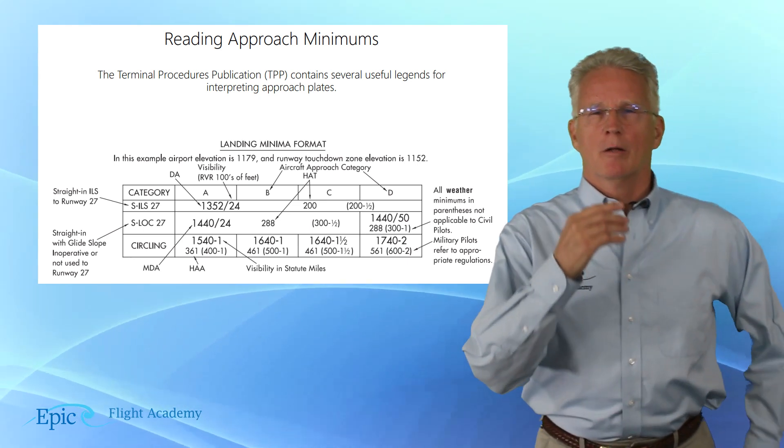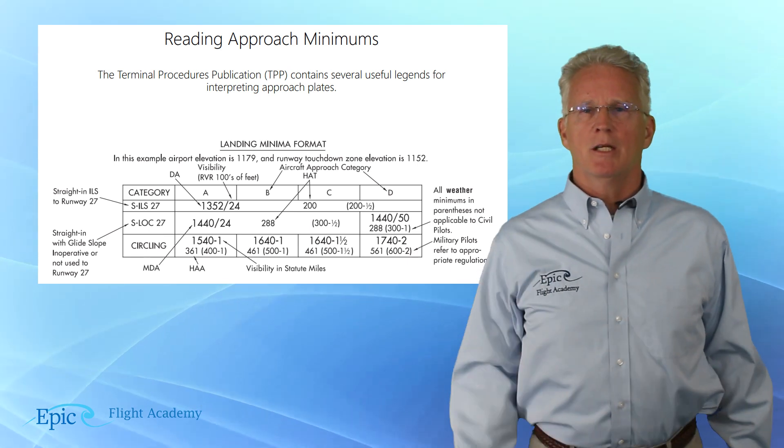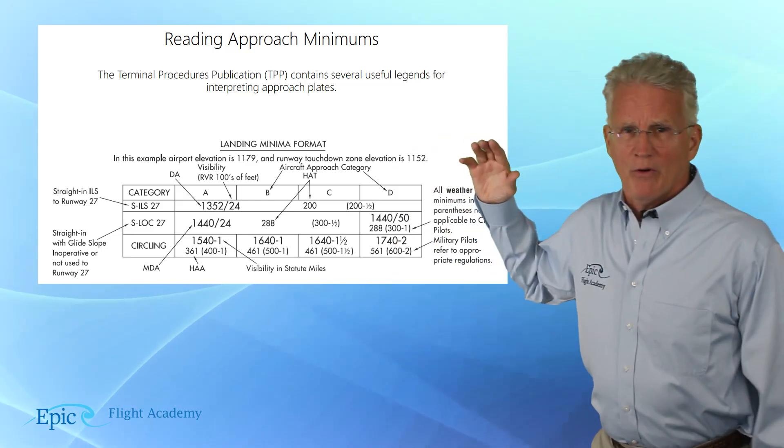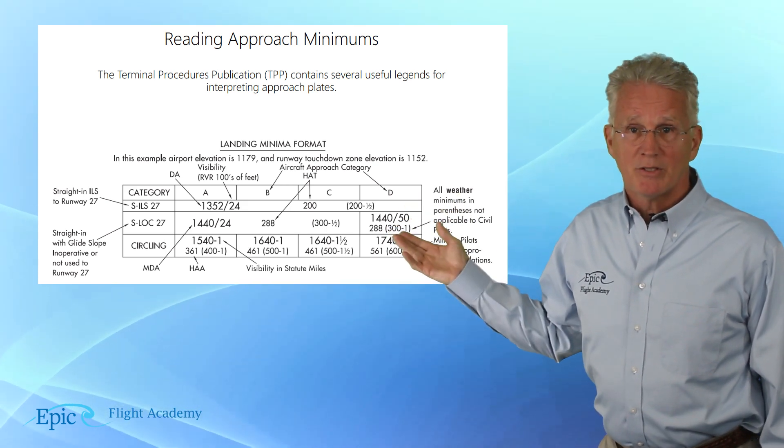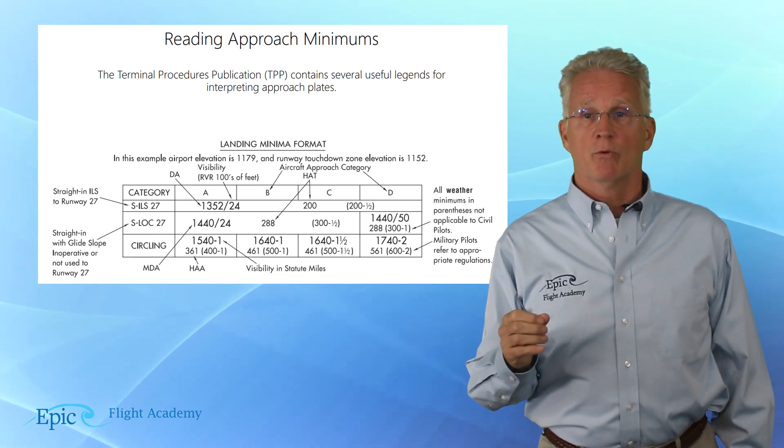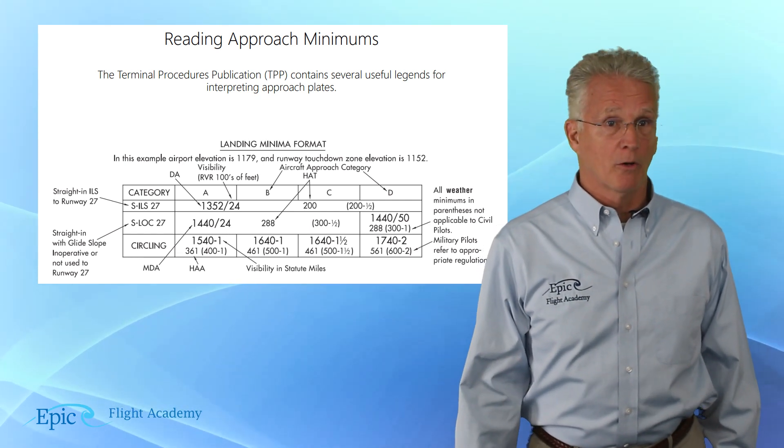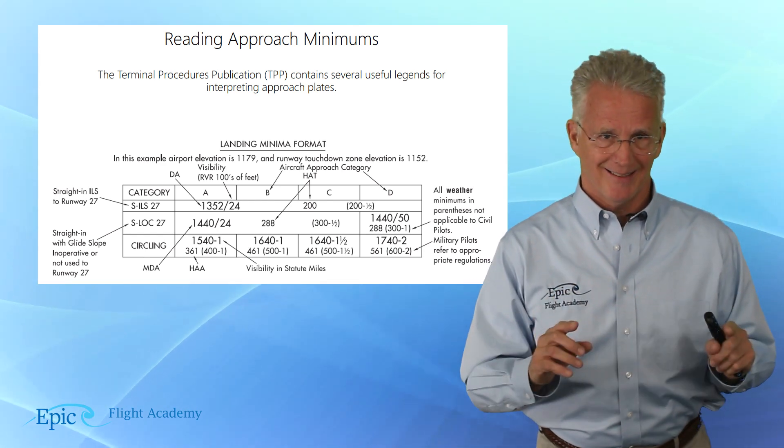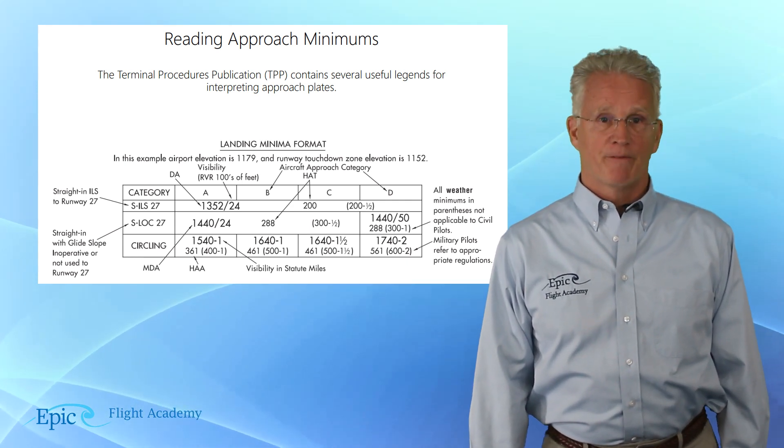And now we might be wondering, well Mike, we're talking about categories A, B, C, and D. What exactly are those? Well, I'm glad you asked, because those are approach aircraft categories based on a speed of VREF if specified, or if VREF is not specified, it is 1.3 VSO at the maximum certified landing weight.